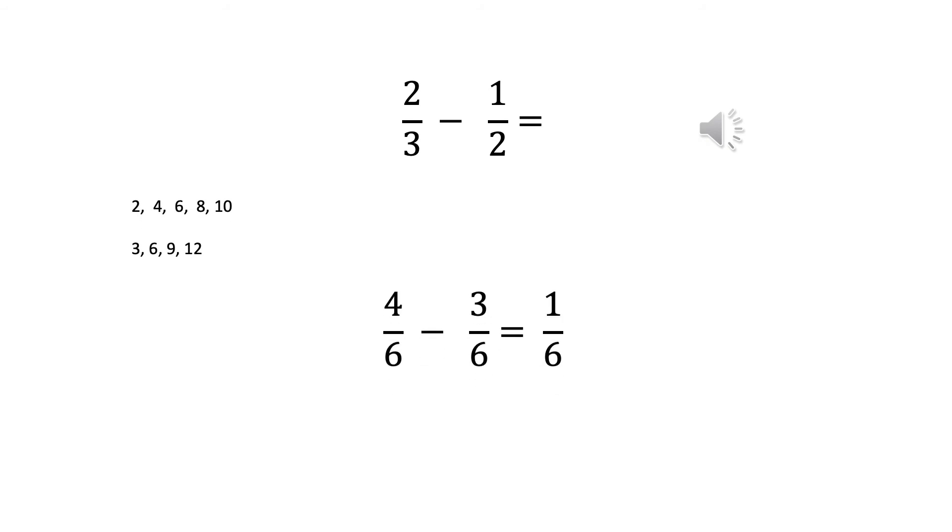So in this example, you'll notice a slight difference. Here we've got two thirds, take away or subtract one half. So the problem that we've got here, like we had yesterday with the addition, is that the denominators are not the same.